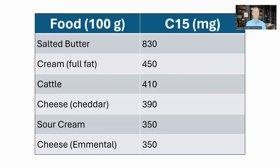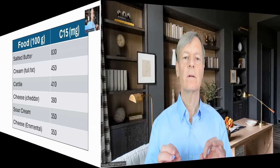So where do we get C15 from? It appears we do not make it internally, so it needs to be acquired through diet. For humans, the main source is full-fat dairy, where it is present in small amounts. It's also available in beef and some fish. The dose recommended by Dr. Van Watson and team is 100 milligrams per day. It is possible to get this from food sources, though they come with even-chain fatty acids such as C16, which have been associated with worse metabolic health.